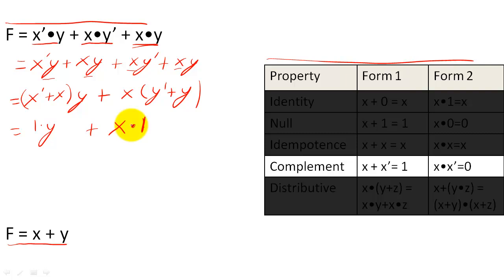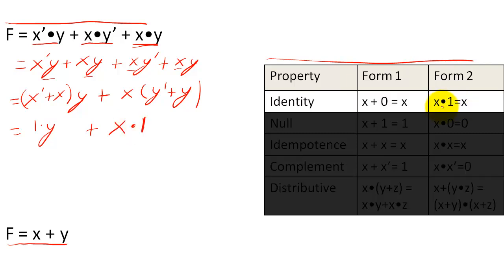Finally, I can use this identity property where I have x and y. One is equal to x, so this is just going to be equal to y or x. So now I can see that I have F is equal to x or y.